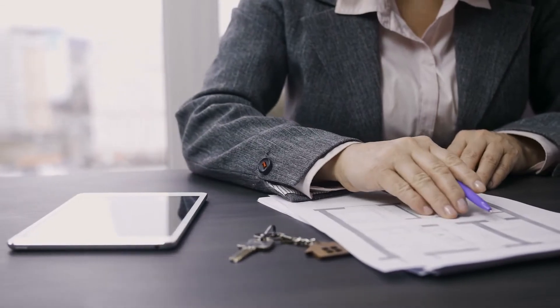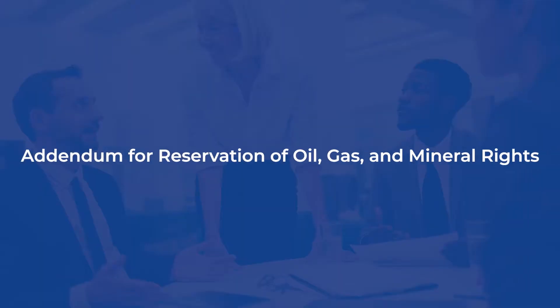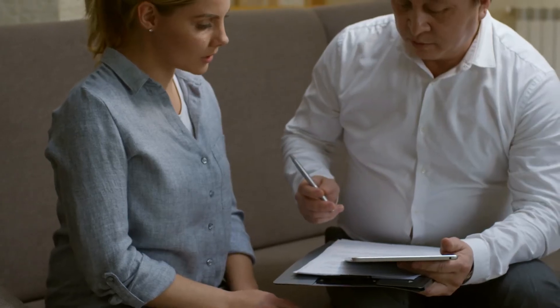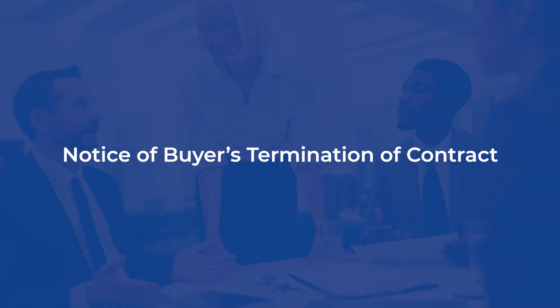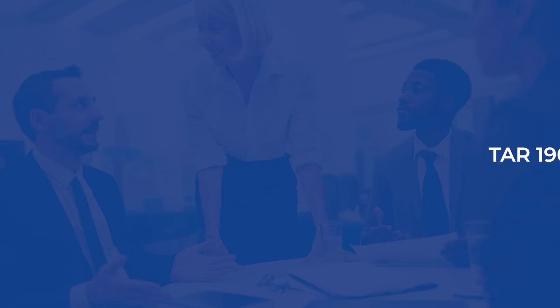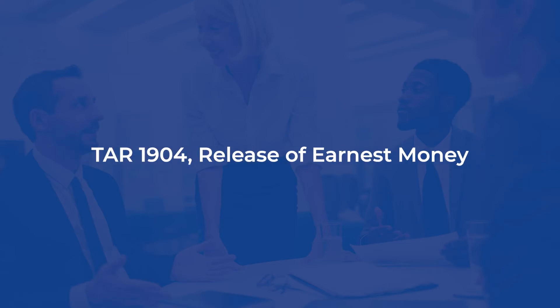Then we'll take a look at a Texas specialty, the addendum for reservation of oil, gas, and mineral rights. We'll follow that with a discussion of two critical forms used in the termination of contracts: the notice of buyer's termination of contract, and the TAR 1904 release of earnest money form.